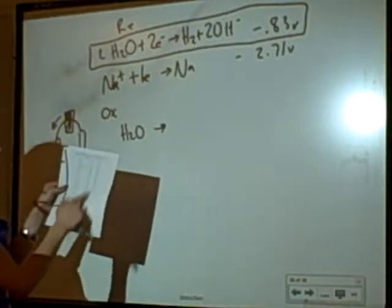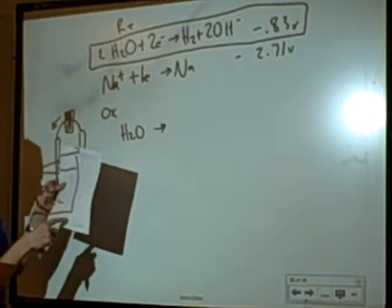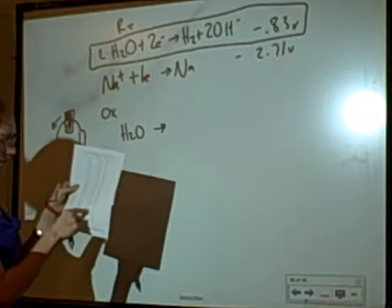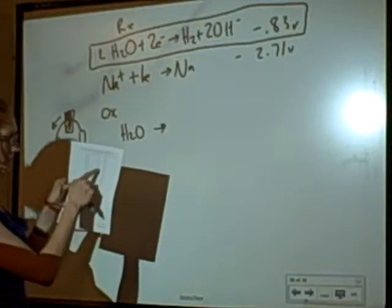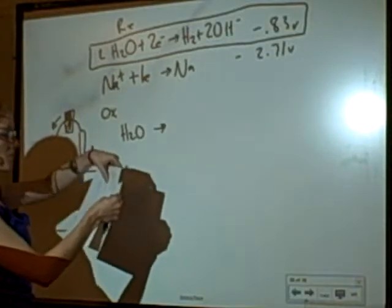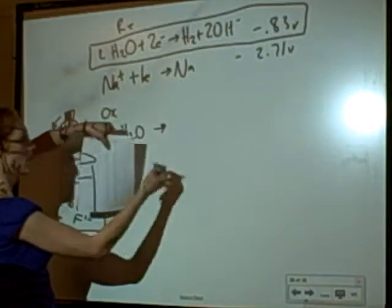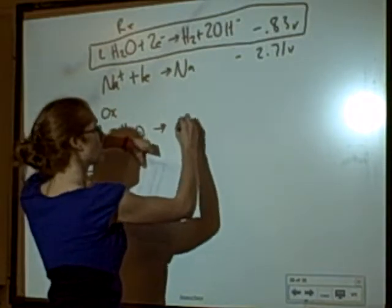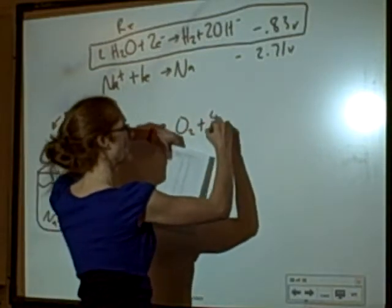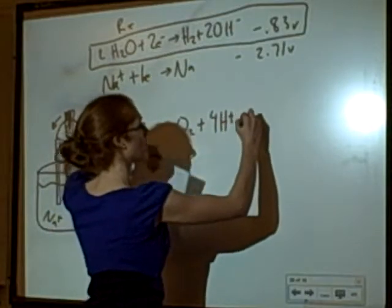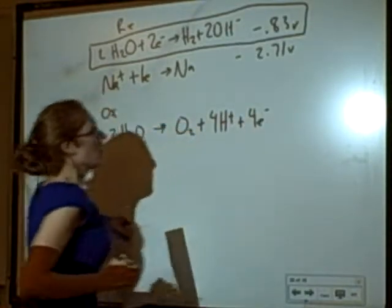You could do that. Or, you could look for when something's been reduced to something, and that something is water. What would it be going backwards? So, I look for water as a product. Two waters go to O2 plus four H pluses plus four electrons.